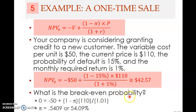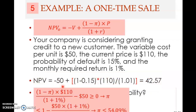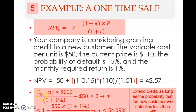The next question is: what is the break-even probability of default? The break-even probability is the probability of default where the net present value equals zero. So we solve: (1 − π) × $110 divided by (1 + 1%), minus $50, must be greater than or equal to 0. We solve for π, the unknown probability of default.